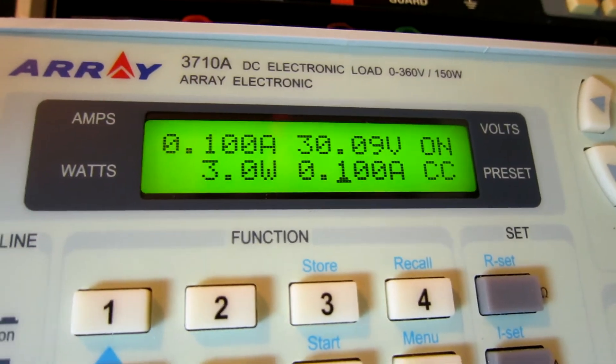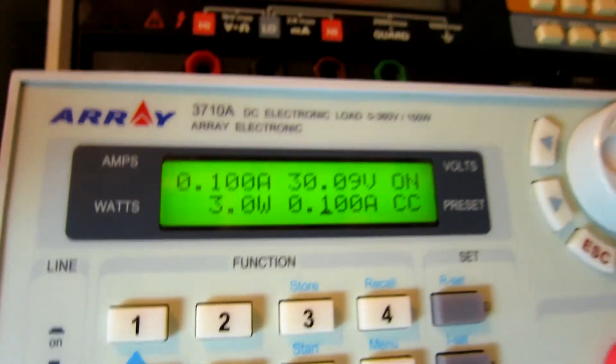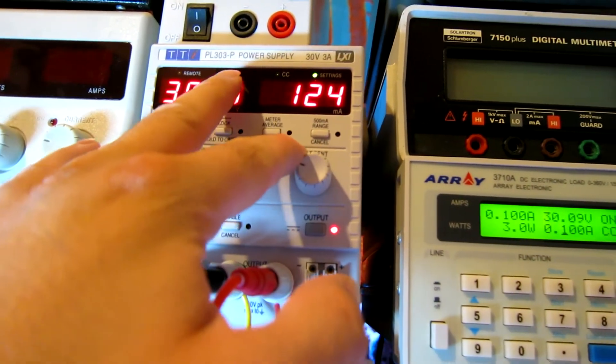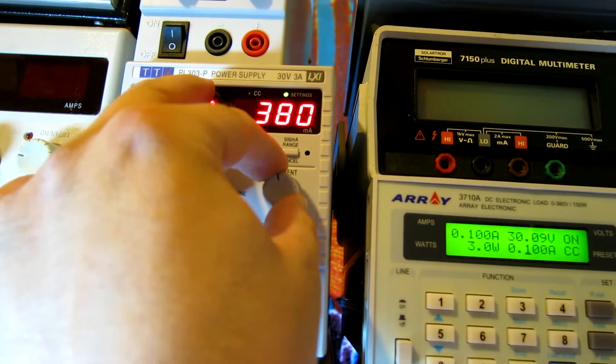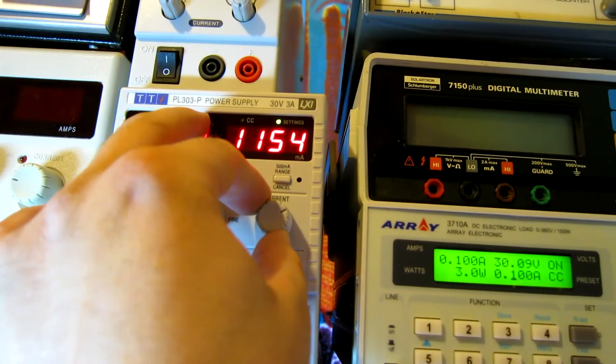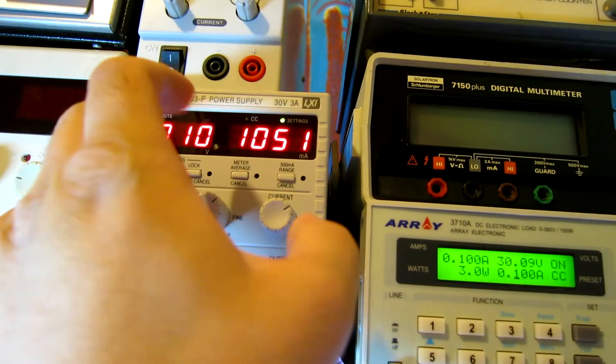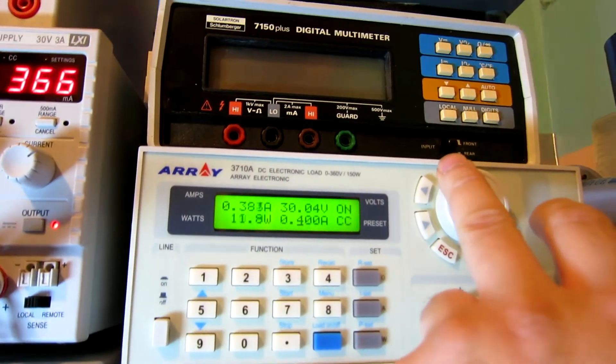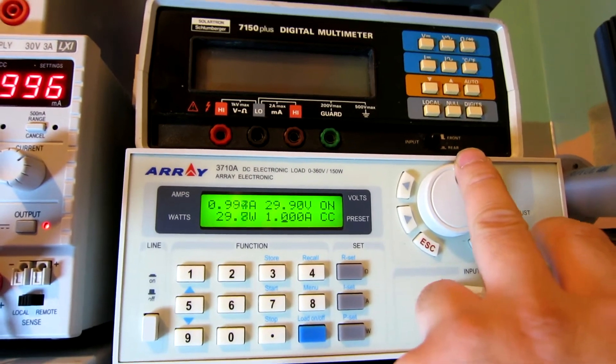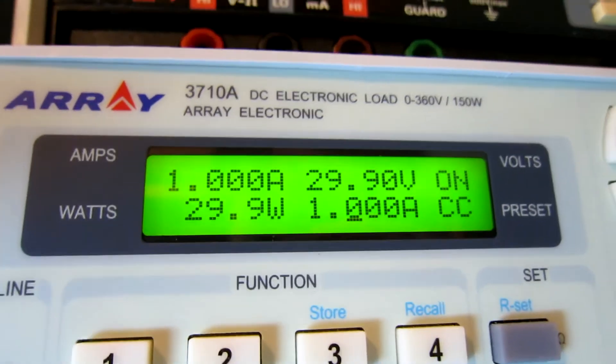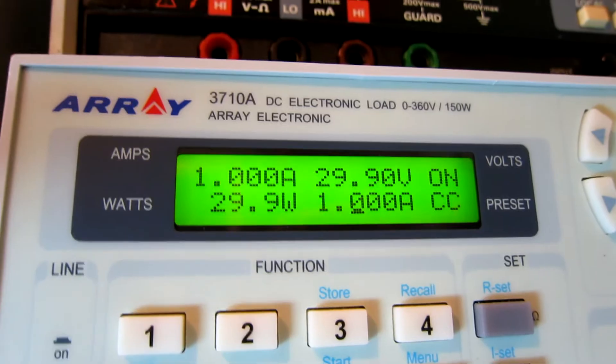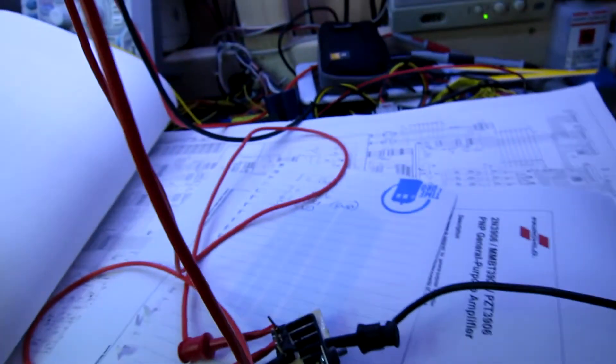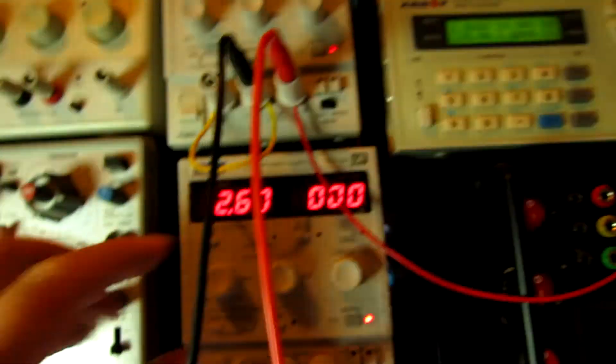There you go, 30 volts, 100 milliamps is being shown. What we'll do is give it a better test. Let's just set that to the reference. We'll do an amp. We've got a current limit of just over an amp set, and we will crank this up. 30 watts, that's 29.9 volts, so it's 29.9 watts being drawn, not getting hot, which is what we expect because these are obviously capable of drawing significant current.